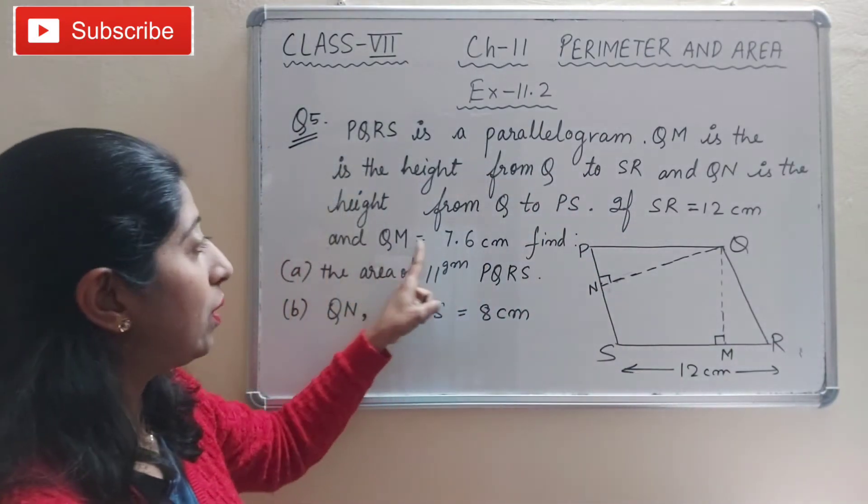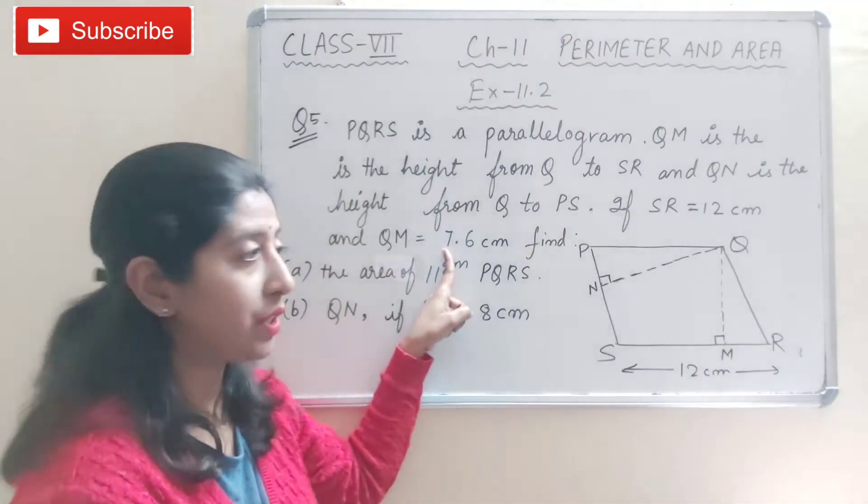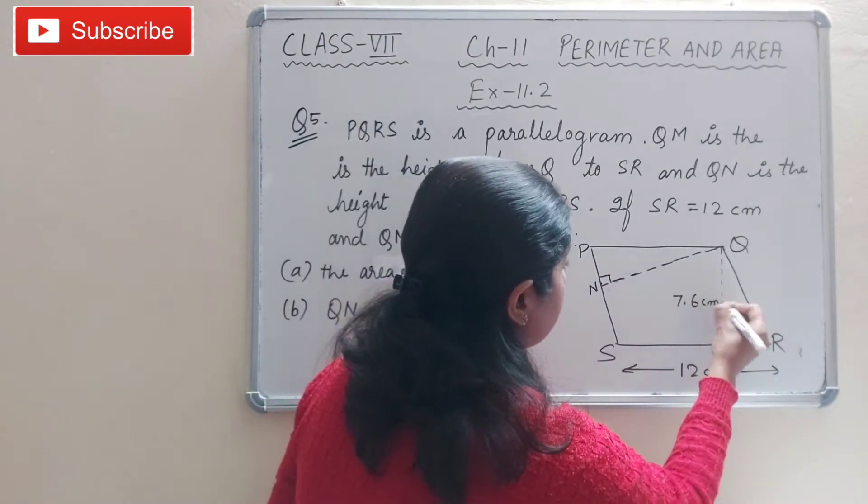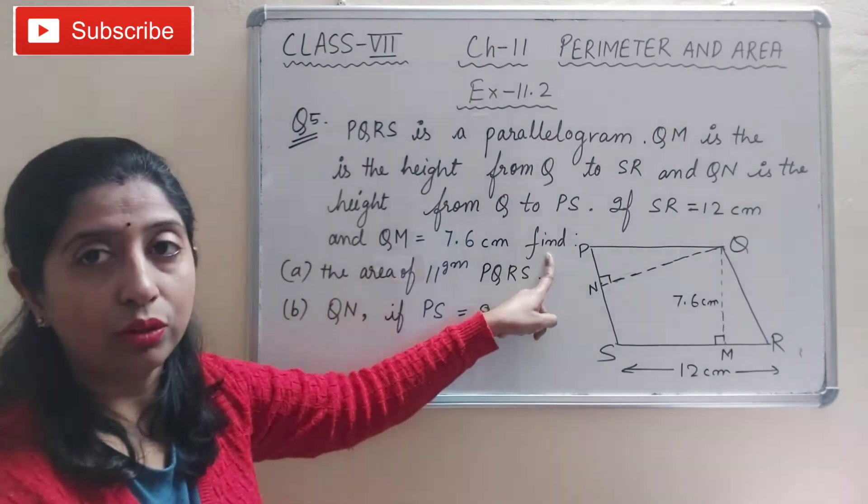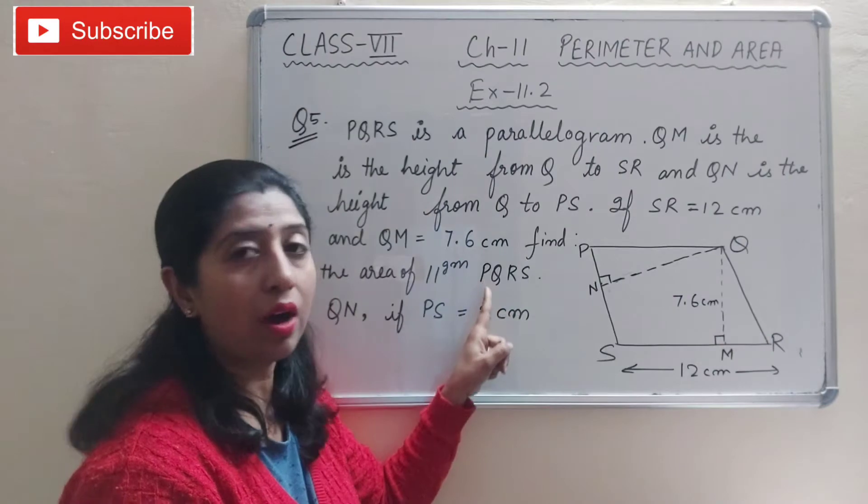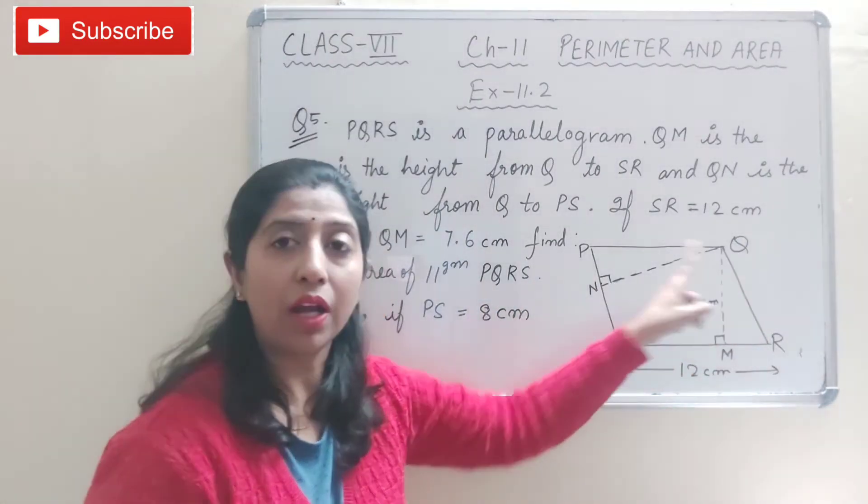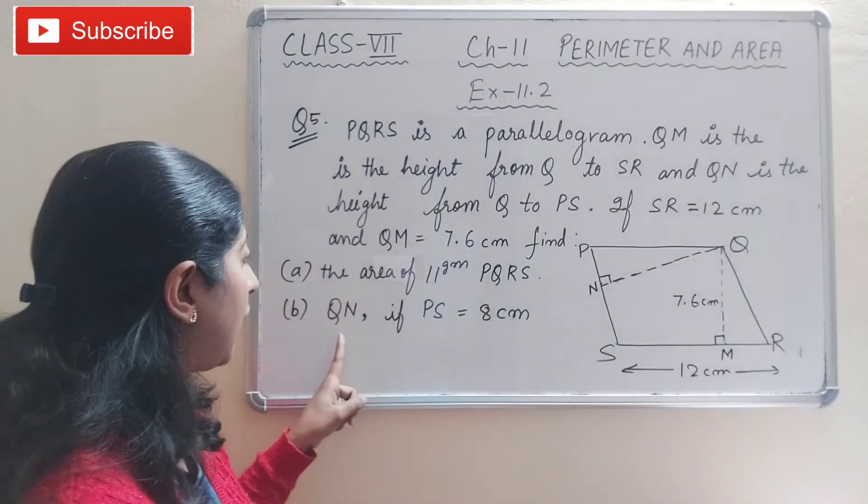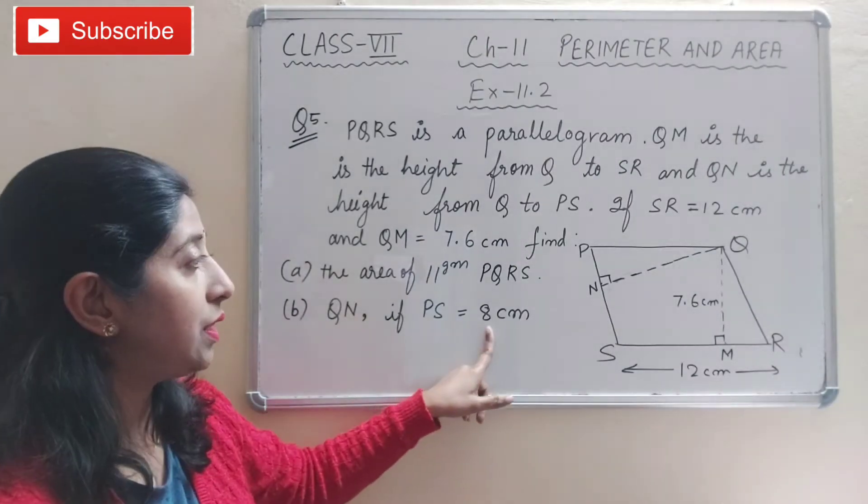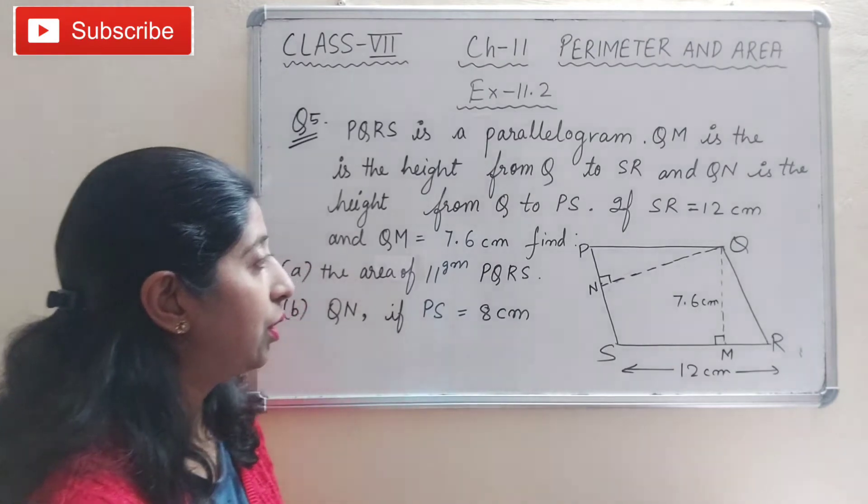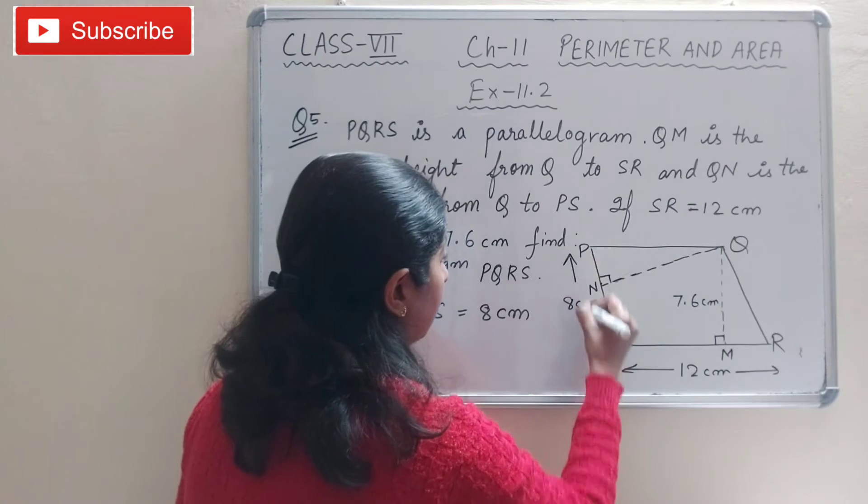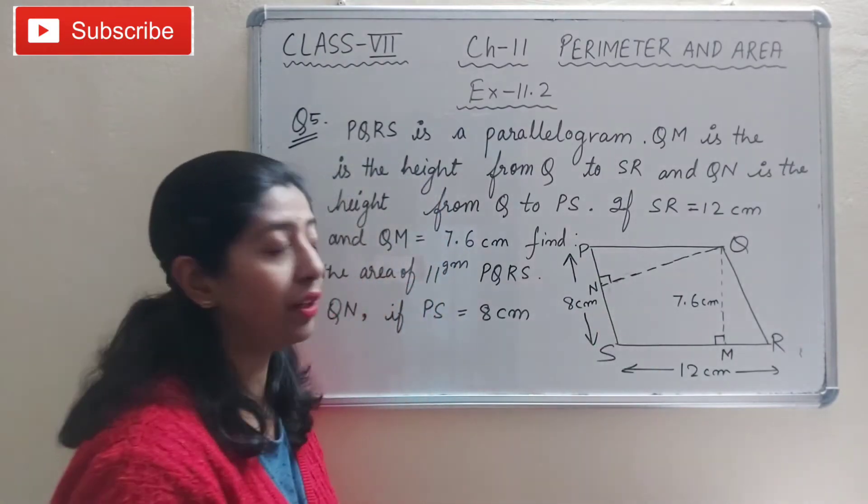Now see, if SR is equal to 12 centimeters and QM is 7.6 centimeters, then find: (a) the area of this parallelogram PQRS, and (b) QN, if PS is equal to 8 centimeters.